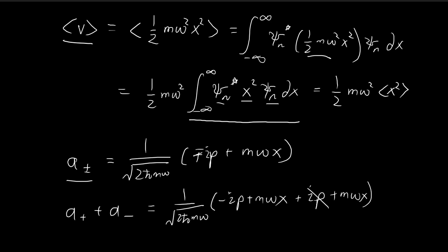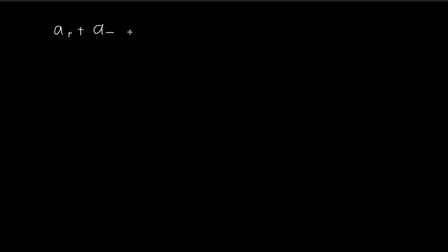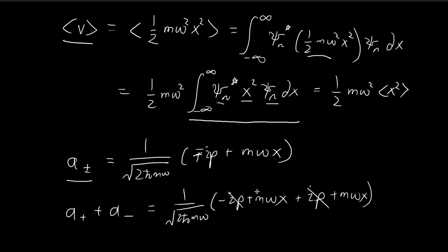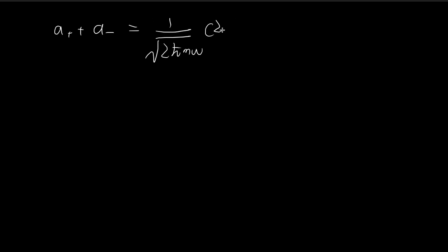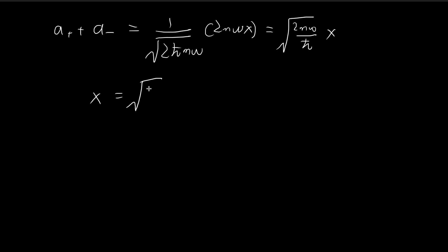For a-, this will be positive ip plus mωx. The two momentum terms cancel out. So in the end, these two operators added together equals these constants times 2mωx. After rationalization we get 2mω divided by ħ times x, and so x is equal to √(ħ / 2mω) times (a+ + a-).